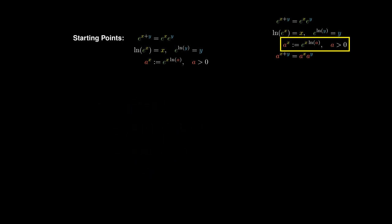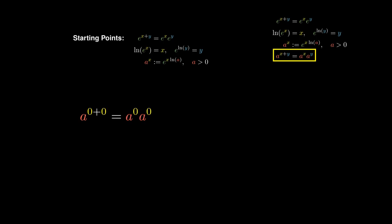If we consider a to the 0 plus 0, we can apply this property to obtain a to the 0 times a to the 0. Since 0 plus 0 equals 0, the left-hand side is a to the 0, while the right-hand side is the square of a to the 0. Dividing out by a to the 0, we get 1 equals a to the 0, since the exponential is always positive.